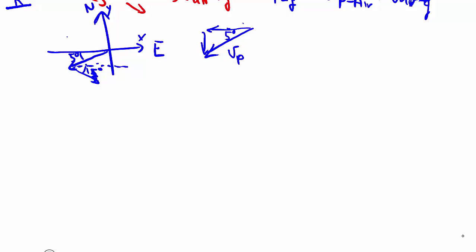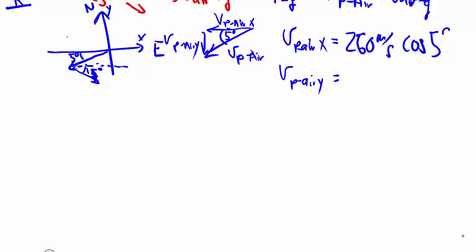We have v plane relative to the air and this is v_p-air in the x, v_p-air in the y. This is equal to 260 meters per second. Because this here is 5, that's cosine because it's the adjacent, 5 degrees, 260 meters per second.